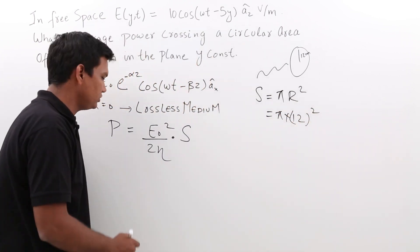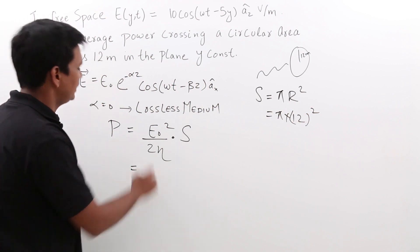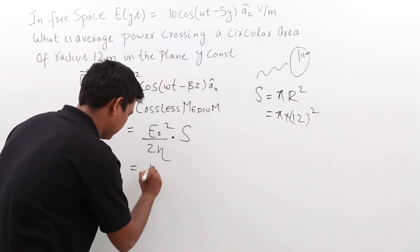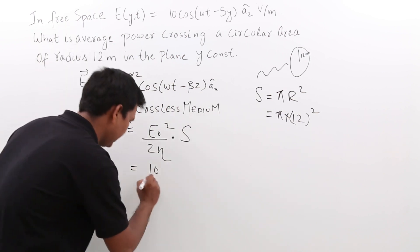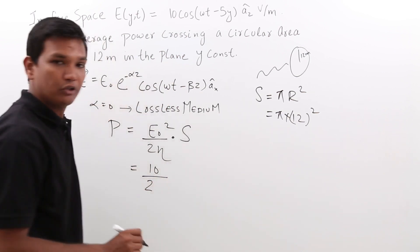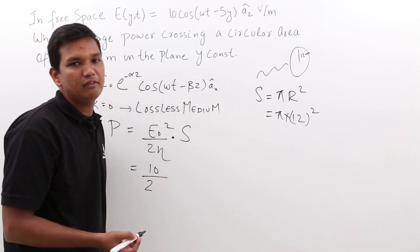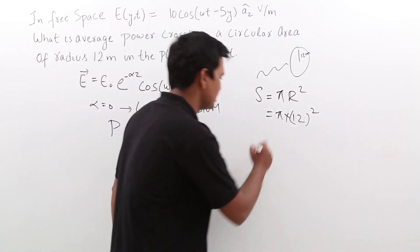Let us substitute the values. So, what would be E₀ here? E₀, it is the amplitude, it is nothing but 10 by 2. As we are talking about a lossless medium, η will be how much? For a lossless medium, we already know that η will be nothing but η for a lossless medium.